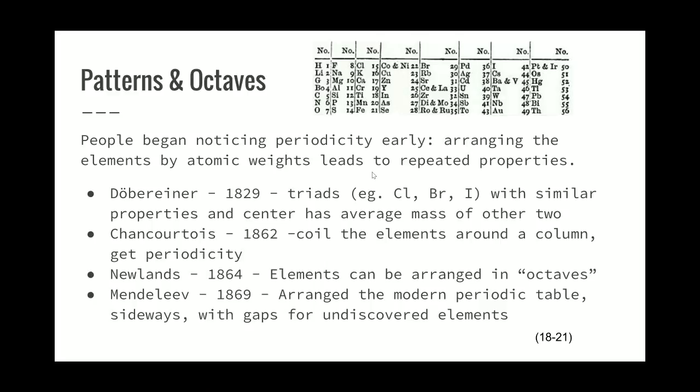Then you get a Frenchman, Jean Chancourtois. He noticed that if you put the elements in order of atomic weight and wrap them around a column, then you get periodicity.